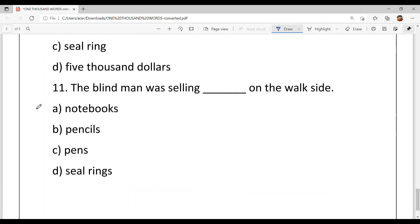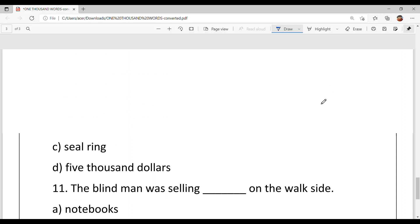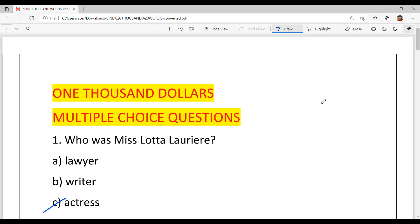And last is, the blind man was selling dash on the walk side. What was the blind man in this chapter selling on the walk side? You have to tell me the answer in the comment section. Option A, notebooks. Option B, pencils. Option C, pens. And option D, seal rings. And with this, our today's multiple choice questions are solved.